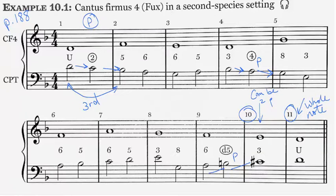Notice also that there is passing motion going from measures two to three, B flat, A, G. We don't circle this sixth because it's not a dissonant passing tone. We would call it a consonant passing tone because a sixth is not a dissonance. So that's just no big deal.